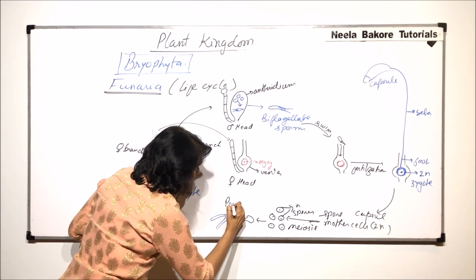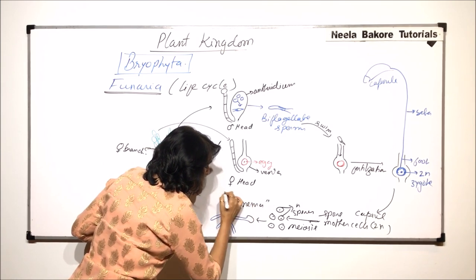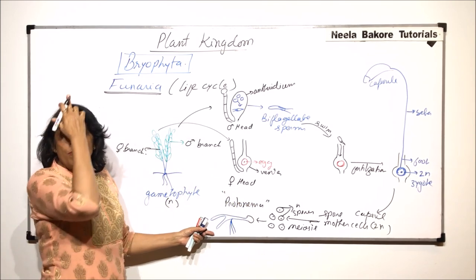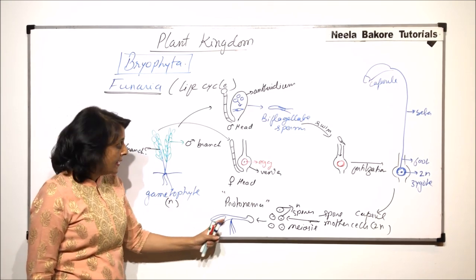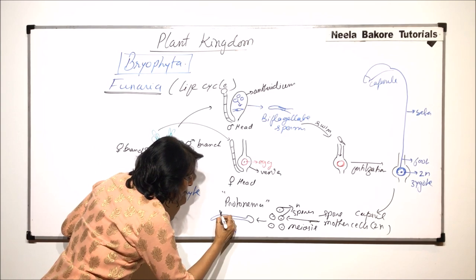This part is known as protonema. This is again an important thing. So protonema is the immature gametophyte. Now on this protonema arises a bud and this bud grows.